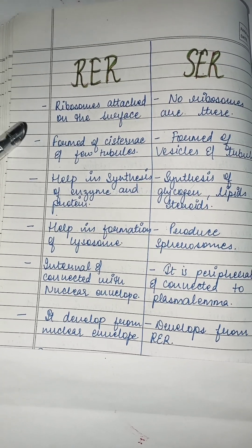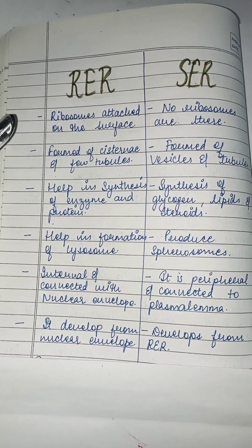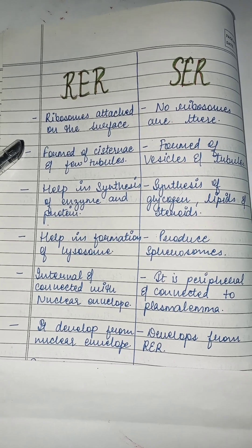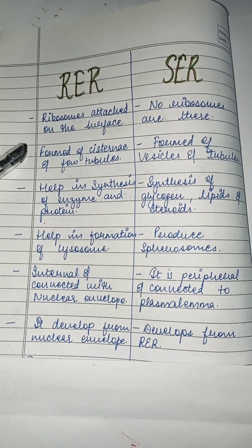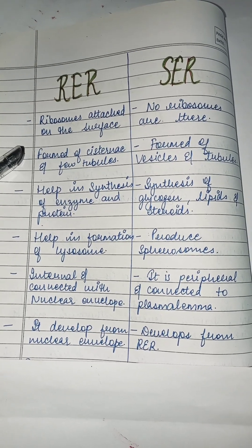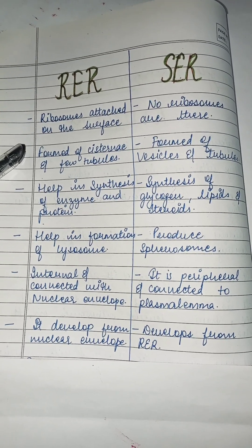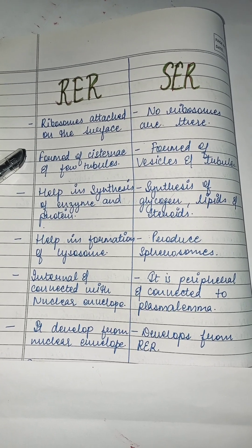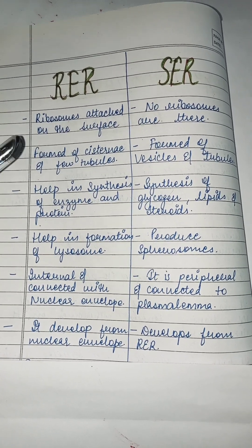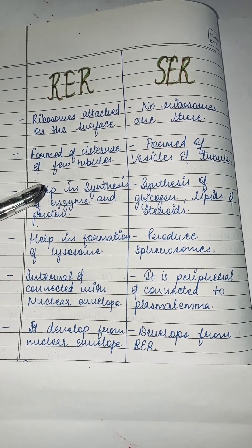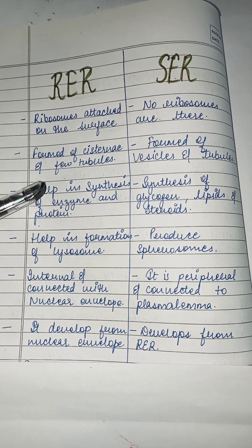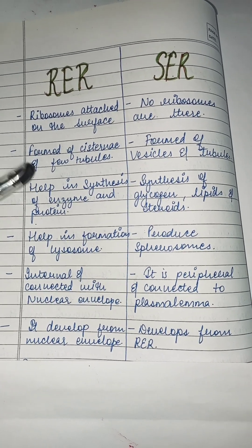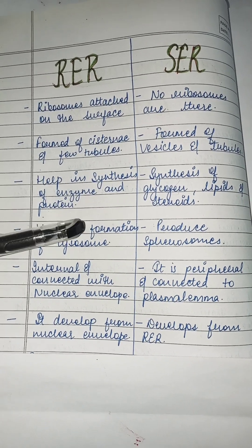Starting with the rough one, there are ribosomes which are attached on the surface. In the smooth, there are no ribosomes attached. The rough is formed of cisternae and a few tubules, and the smooth one is formed of vesicles and tubules.